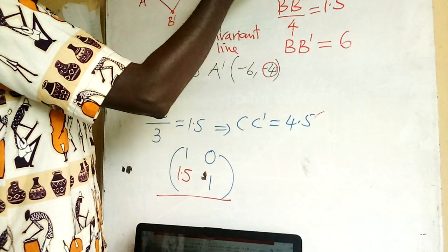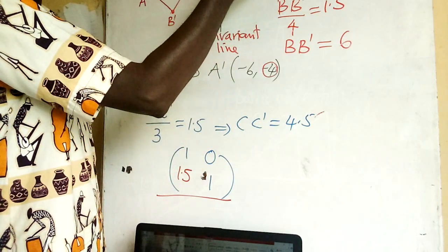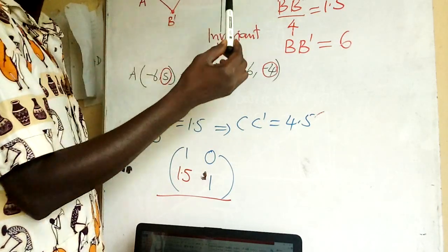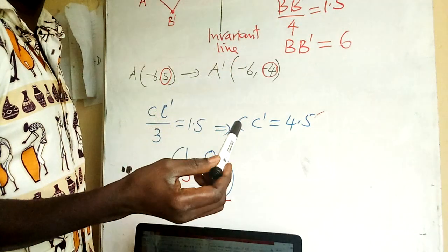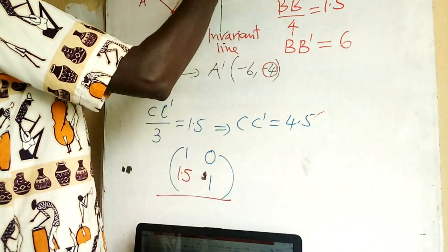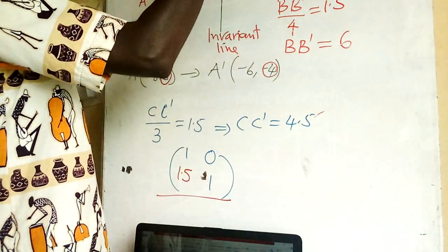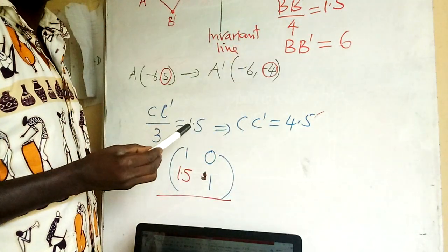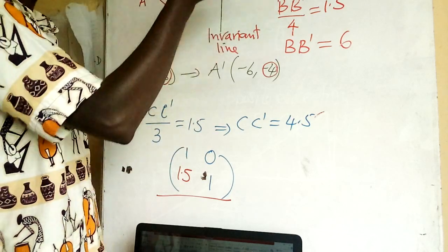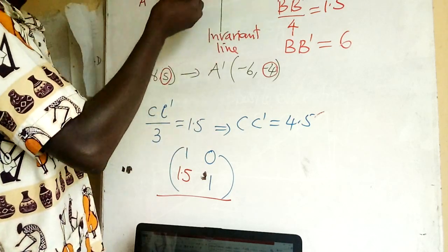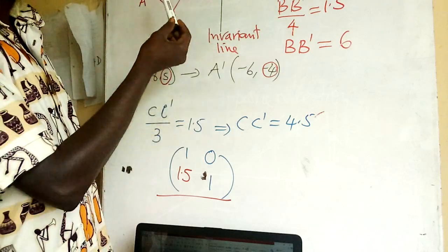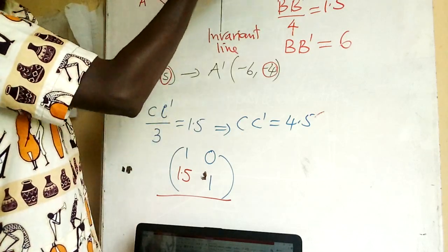We count from C four and a half steps — I'm using boxes in my counting — so four boxes and a half. After that you get the position of C prime. Then join A prime, B prime, C prime and you'll get a figure like this.